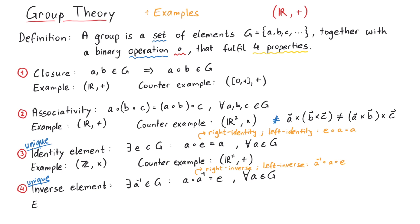For an example of the inverse element, consider Z plus. In this case, the inverse element of any number is given by the negative of that number. For a counterexample, consider Z with multiplication, so that the inverse of a is simply 1 divided by a. But 1 over a is not in Z for most cases of a, so this cannot be a group.